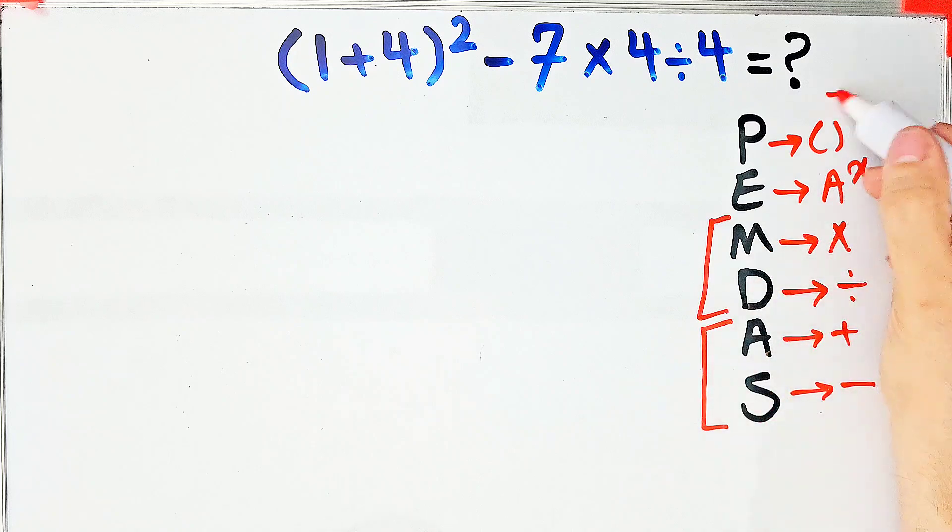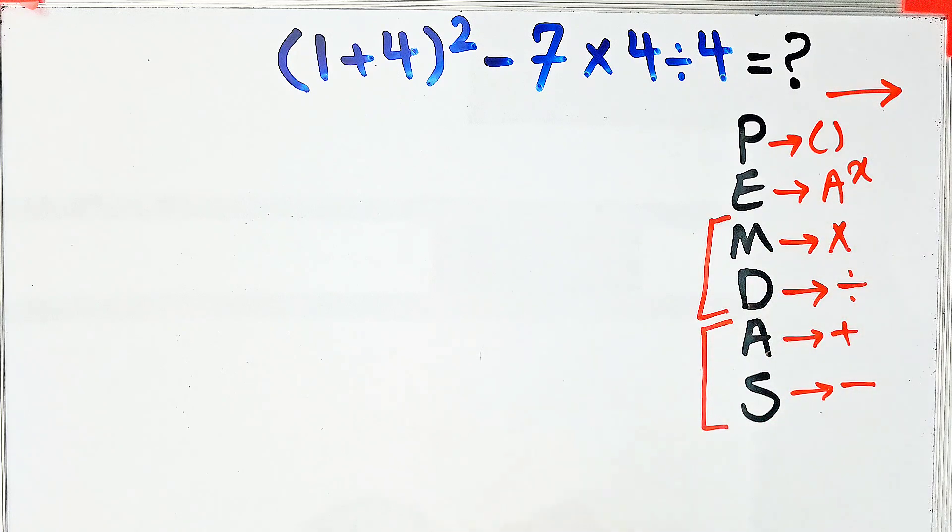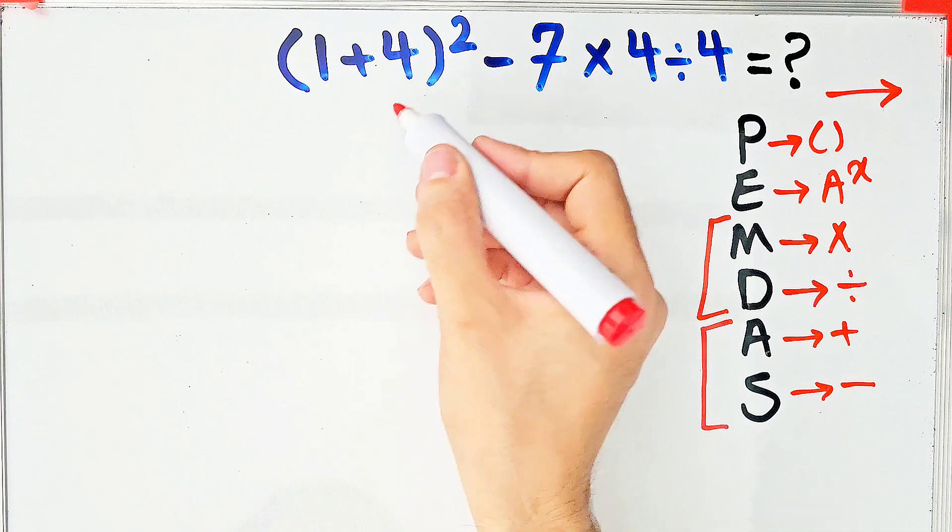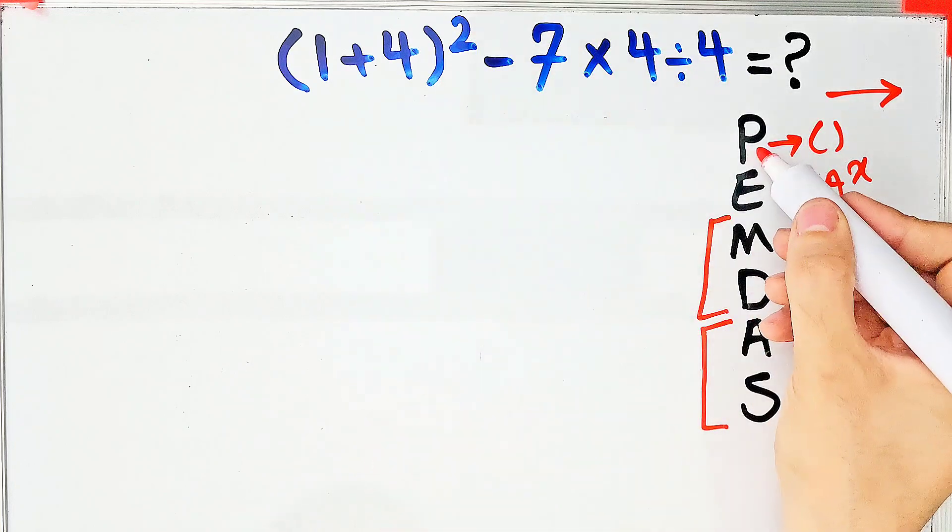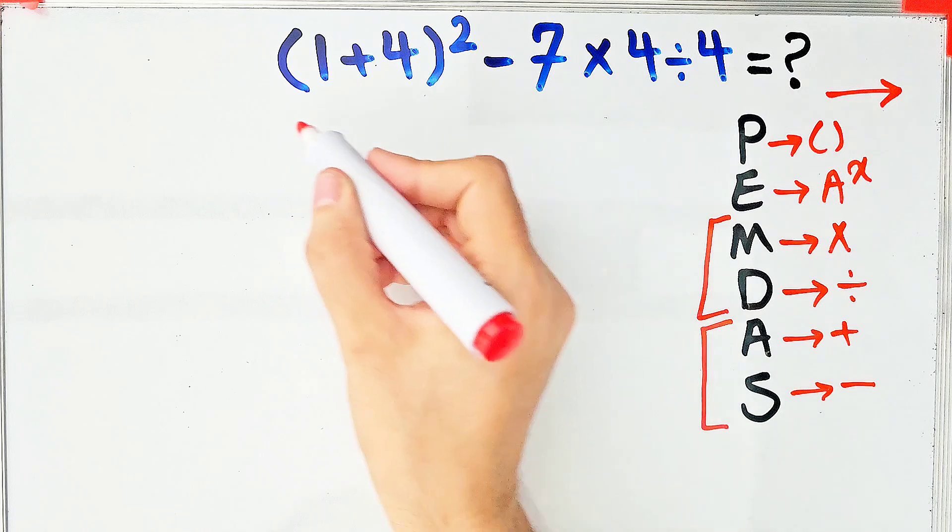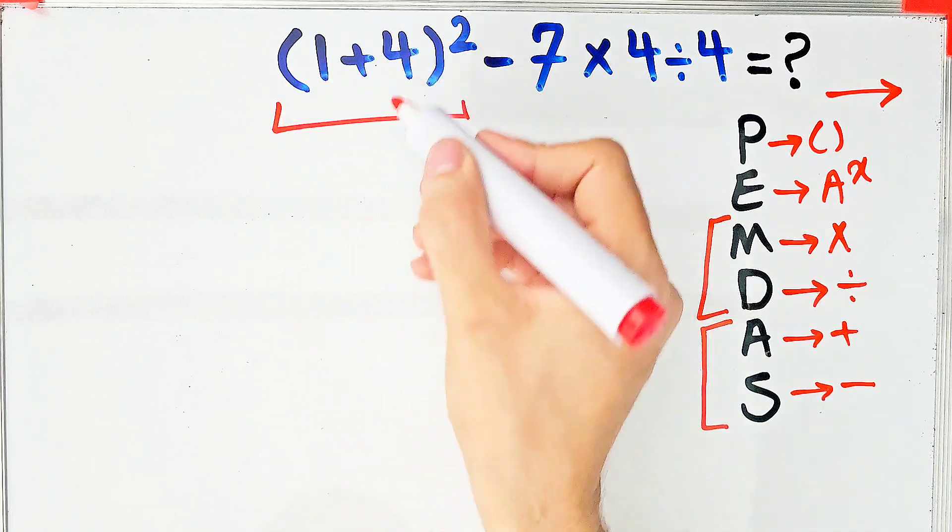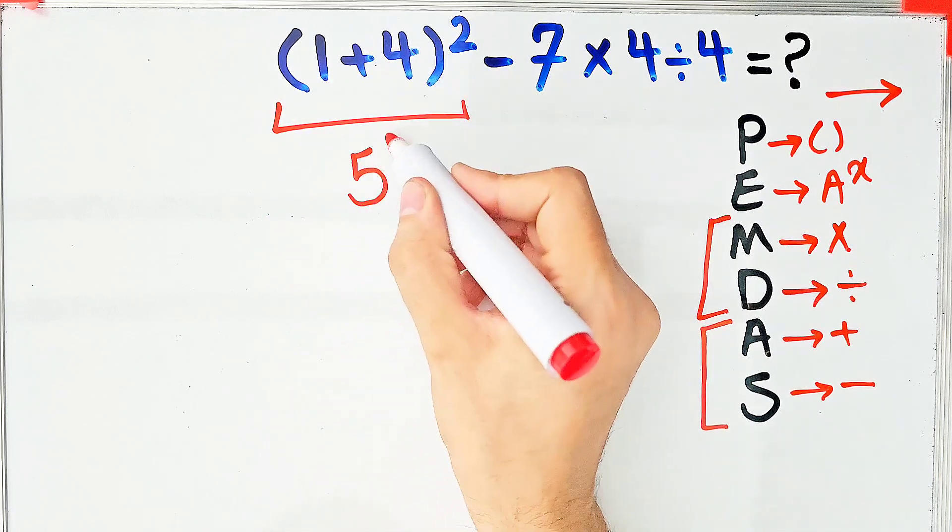In this question we have parenthesis, addition, exponent, subtraction, multiplication and division. First we simplify the parenthesis. One plus four equals five. Five to the power of two minus seven times four then divided by four.